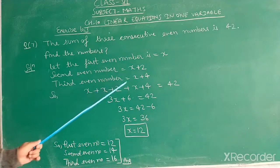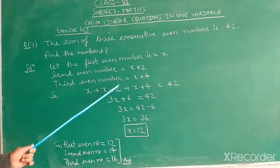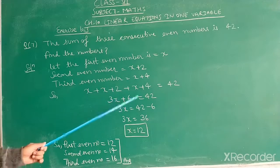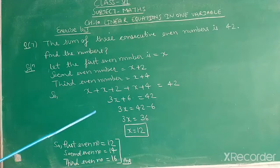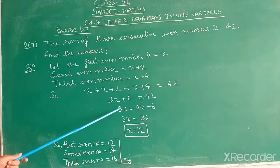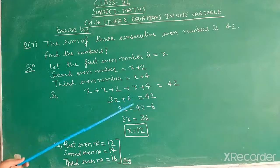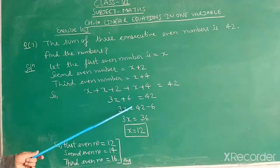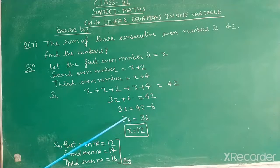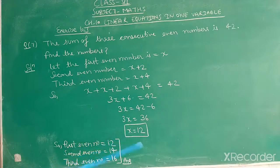x plus x plus x, that is 3x plus 4 and 2, that is 6, is equal to 42. Then we find the value of x. 3x is equal to 42 minus 6. 3x is equal to 36. x is equal to 36 divided by 3, that is 12.